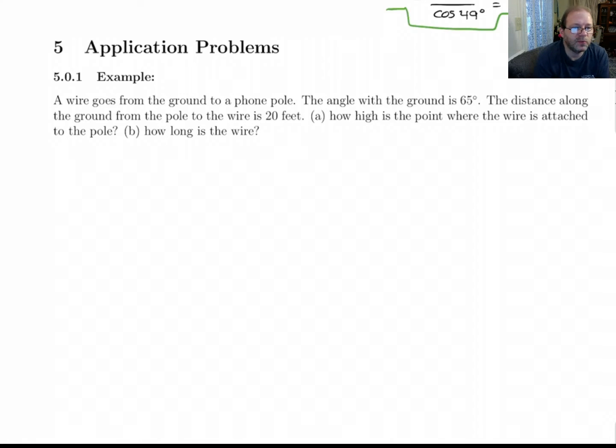Alright, let's do a couple of word problems with trig functions. In this problem it says a wire goes from the ground to a phone pole. The angle with the ground is 65 degrees, and the distance along the ground from the pole is 20 feet. How high is the point where the wire is attached to the pole, and how long is the wire?